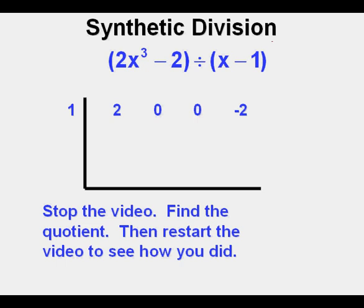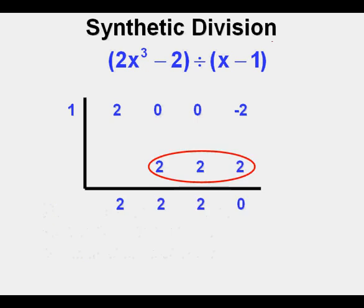Here are the numbers filled in below and inside the frame. This zero on the right means that the remainder is zero, so it divides out neatly. And our quotient is 2x squared plus 2x plus 2.